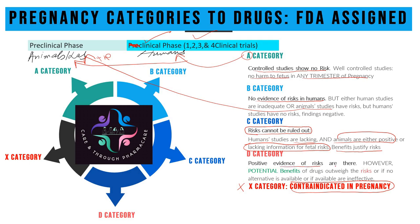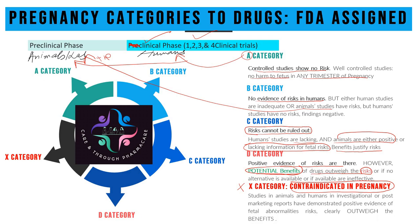In Category D, we measure the benefits versus the risk. In Category X, there are classical reports — both in animal studies and in humans — regarding harmful effects on the fetus, and the risk clearly outweighs the benefits. This is the reverse of Category D, where potential benefits outweigh the risk, but in Category X, the risk outweighs the benefits.